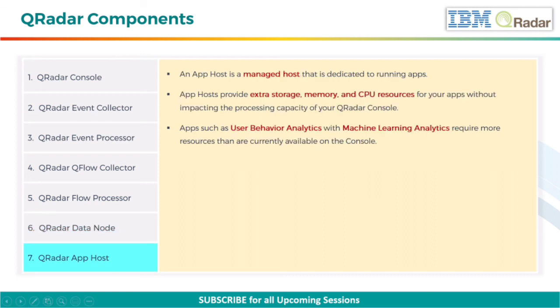Lastly, an app host is a managed host that is dedicated to running apps. App hosts provide extra storage, memory, and CPU resources for your apps without impacting the processing capacity of your QRadar console. Apps such as User Behavior Analytics with Machine Learning Analytics require more resources than are currently available on the console.